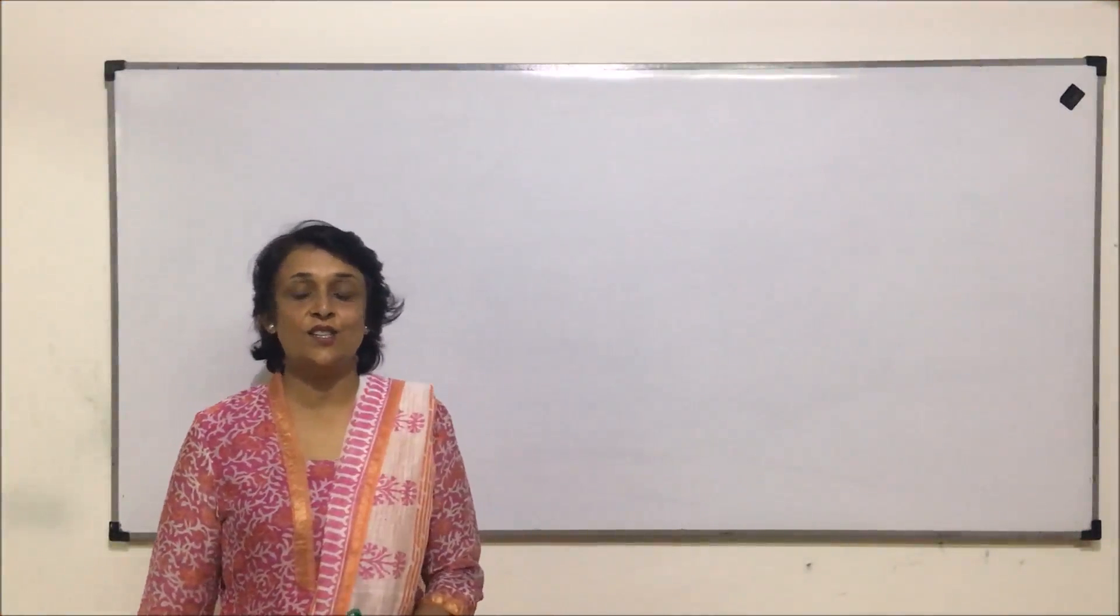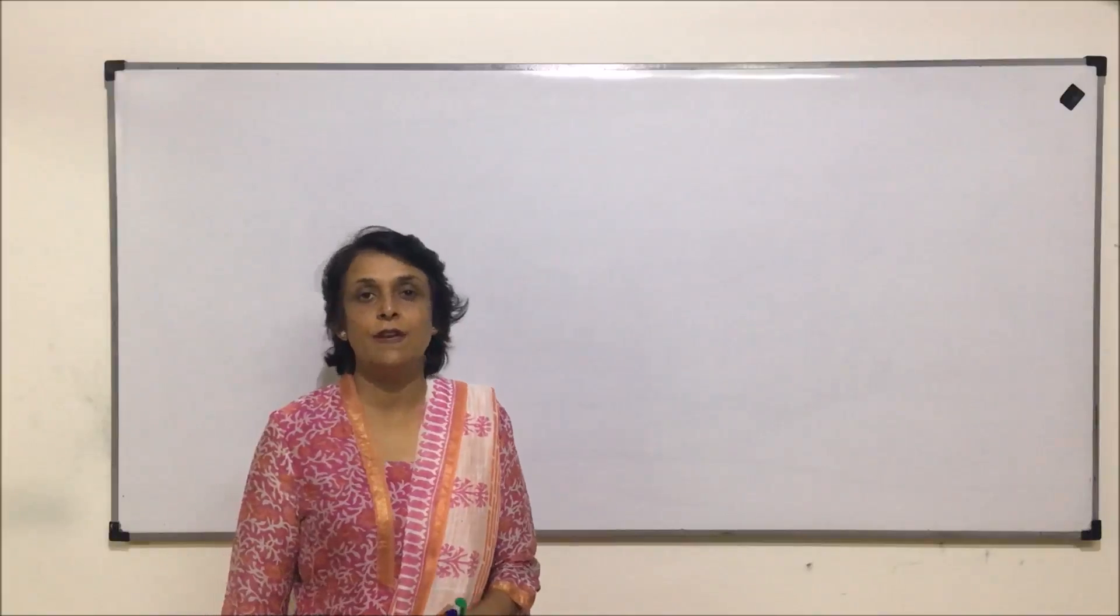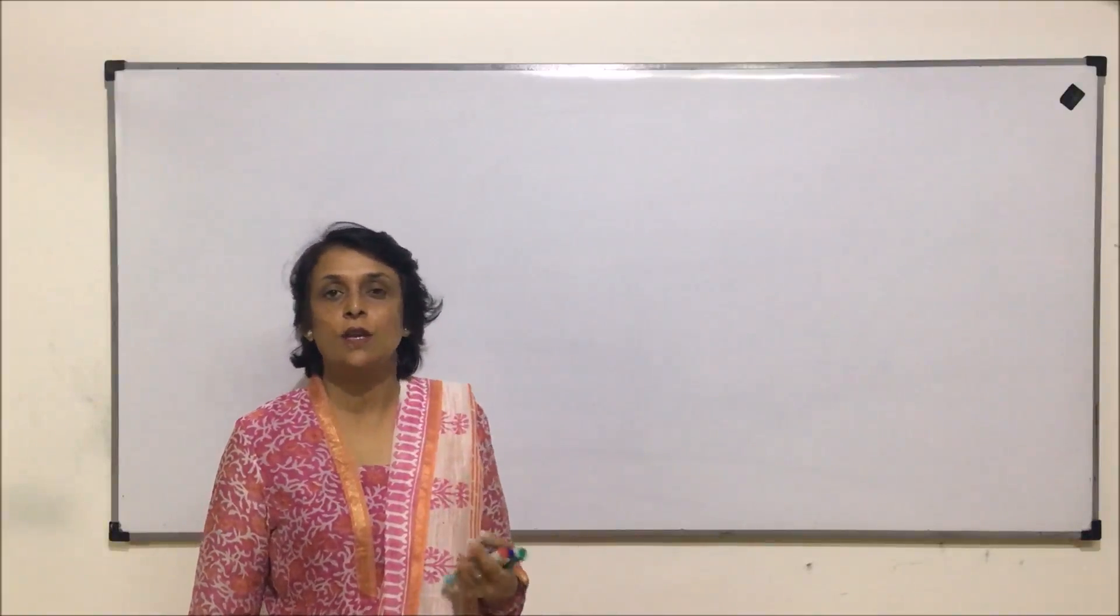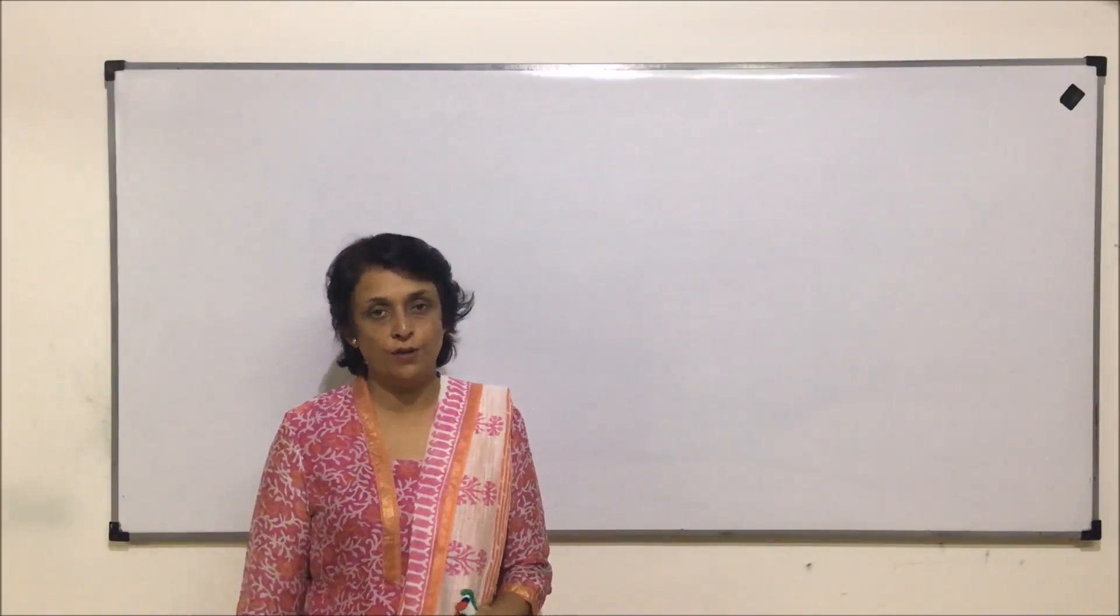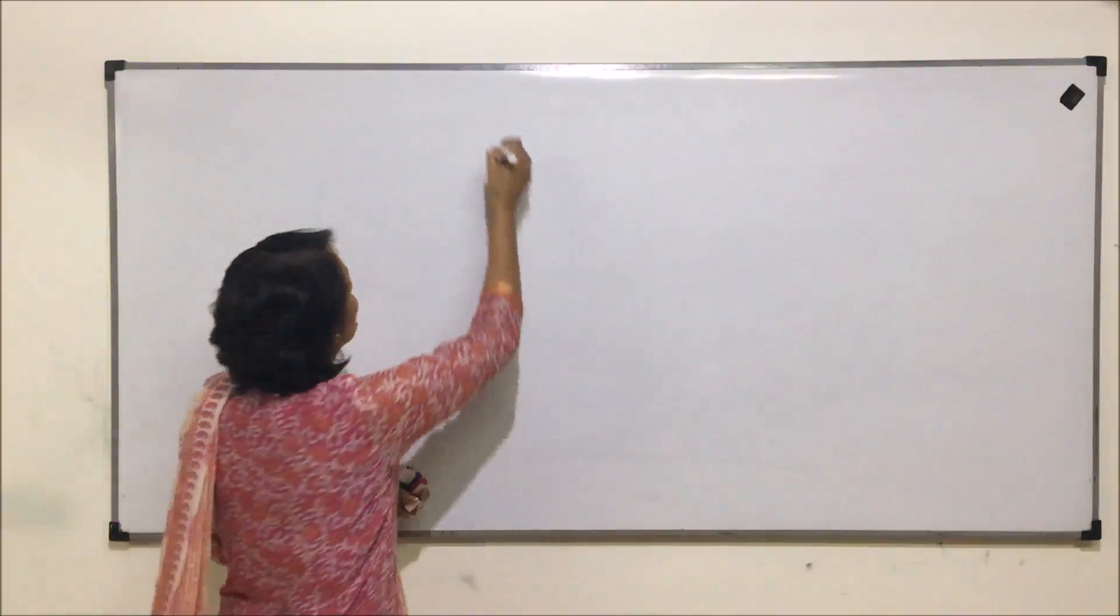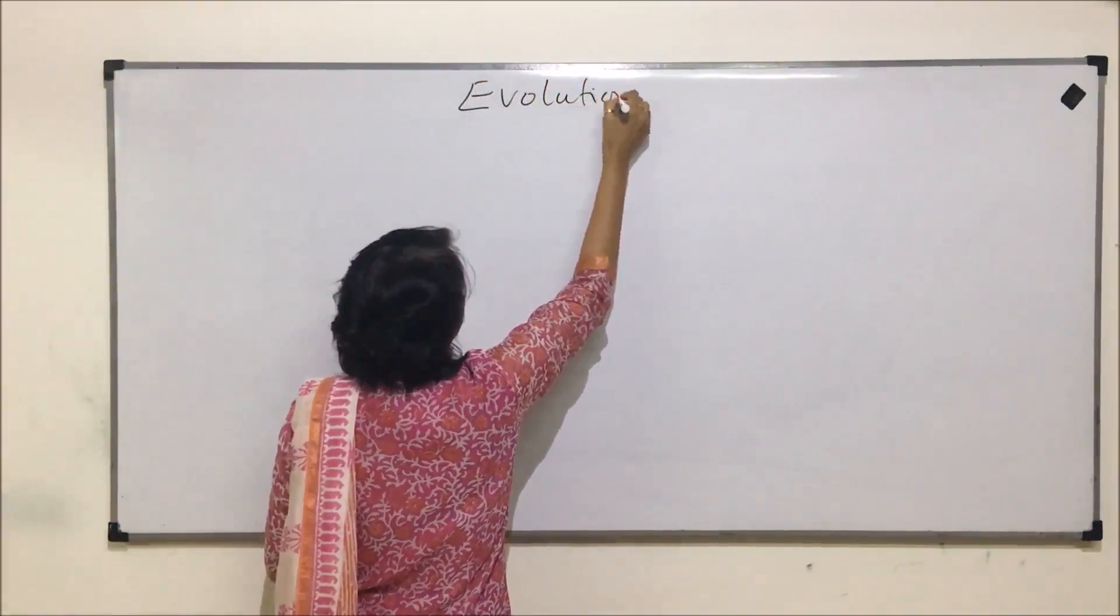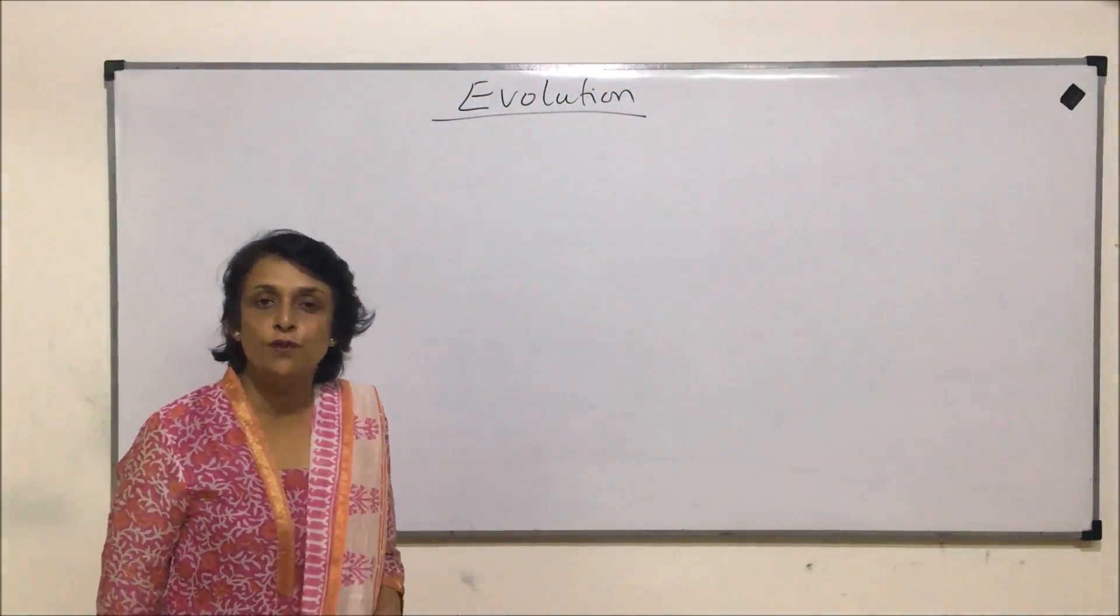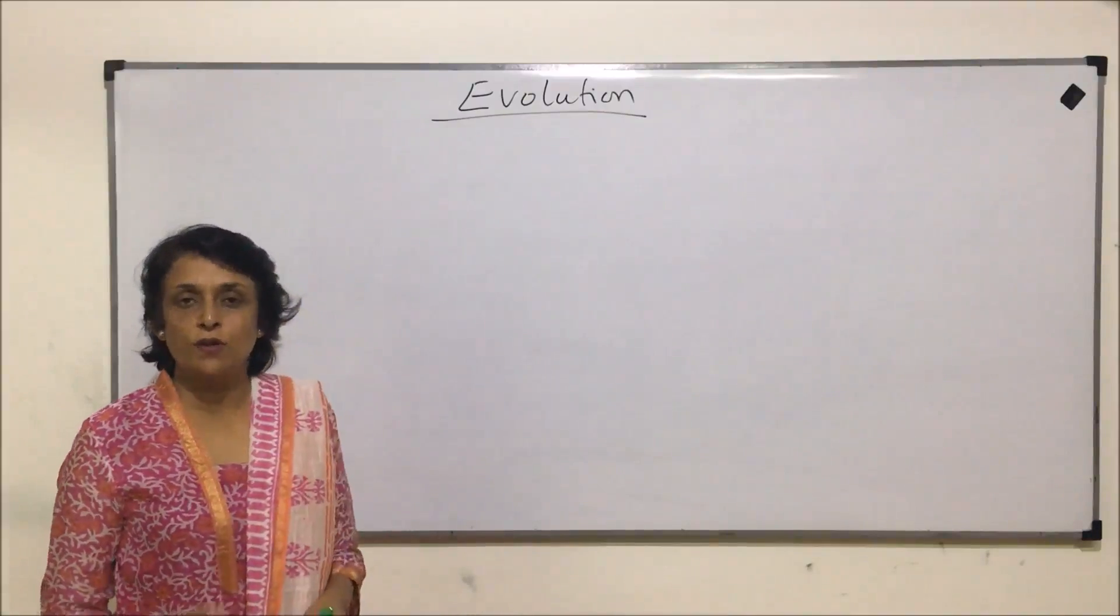We are starting the last chapter of the unit of genetics and evolution. We have done the first part, that is Mendel's laws and various types of inheritance, and the second one, the molecular basis. Now the last one is evolution.